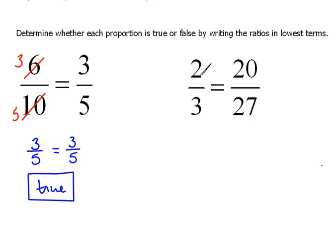Over here we have 2 thirds equals 20 over 27. Or, if we're looking at it as proportion, 2 is to 3 as 20 is to 27. So, in order to see whether this is true or not, we need to fully reduce. And our 2 and our 3 here, they don't have a common factor that we can cancel. But what about 20 and 27?